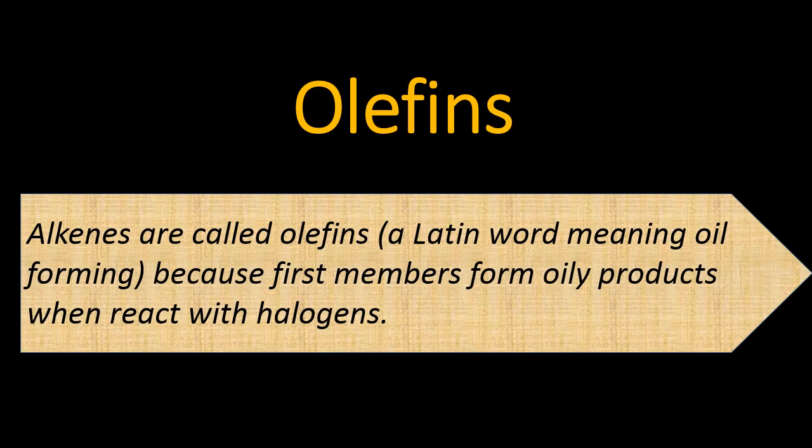Alkenes are also recognized as olefins, a Latin word meaning oil forming. And it's a very important short question because first members form oily products when react with halogens. And halogens are group 7A.